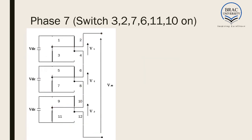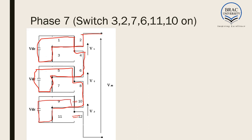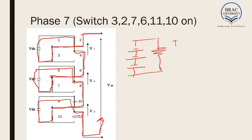The seventh phase is similar to the sixth phase, but in this case switch number 12 is turned off and switch number 10 is turned on. The current goes through the negative of the first VDC, the negative of the second VDC, and the negative of the third VDC, then through the output. So we get V output equal to minus 3VDC.